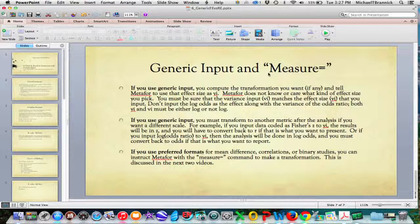And it's kind of interesting the confidence limits here for the fixed don't include the estimate you get for the random. So they're a little different there. So this video is about generic input. Metafor has built in a command called measure equal and it doesn't work if you use generic input. So if you use generic input you compute the transformation you want if any and you tell Metafor to use that effect size by saying y sub i equals whatever it is you computed. And Metafor doesn't know, doesn't care what effect size that is. So it can be z, it can be r, it can be anything you want.